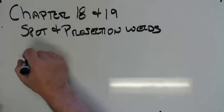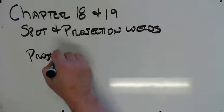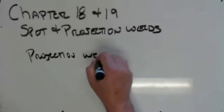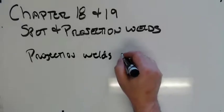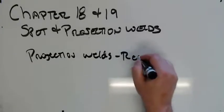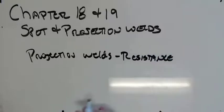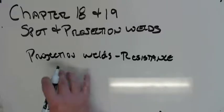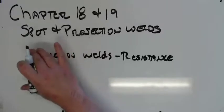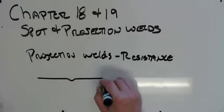The first one is projection welds are always resistance welded. We can't do them with TIG or any other process. And the reason for that is because the part is actually the electrode.